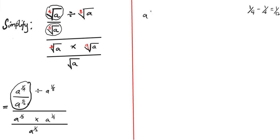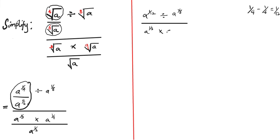So instead of a to the power one over four divided by a to the power one over six, we write a to the power one over twelve. The updated expression is: a to the power one over twelve, divided by a to the power one over eight, then divided by a to the power four over nine, then divided by a to the power one over two.